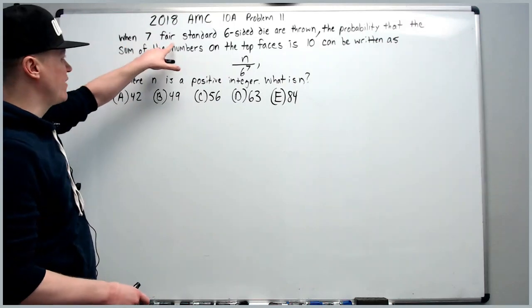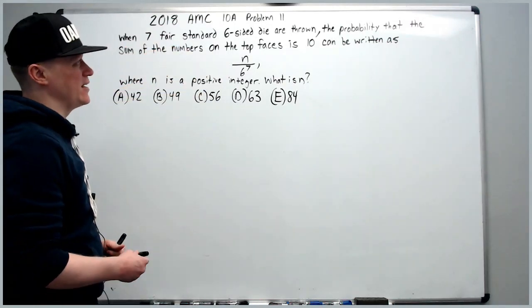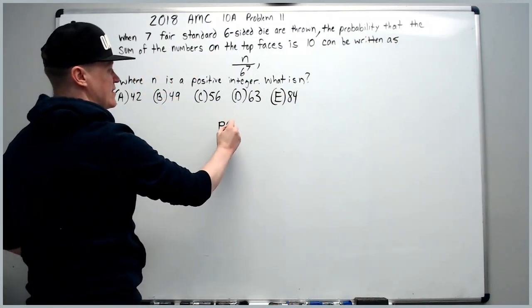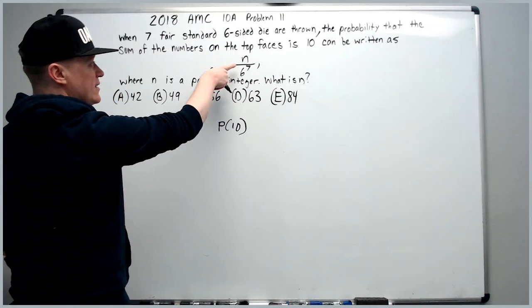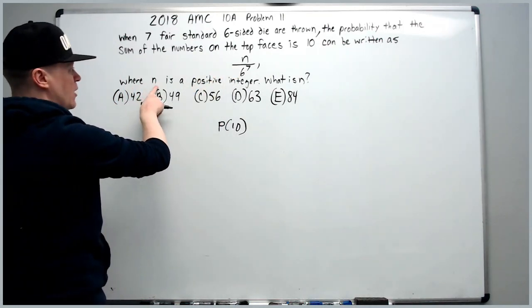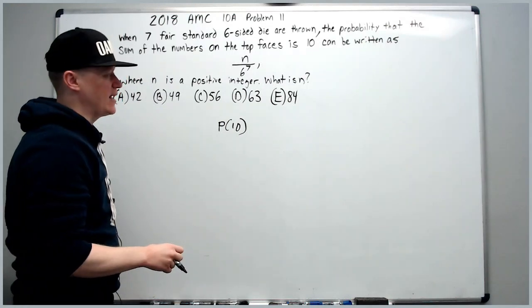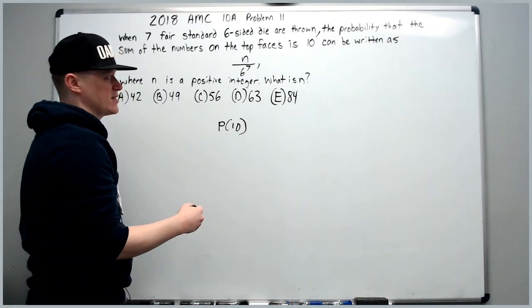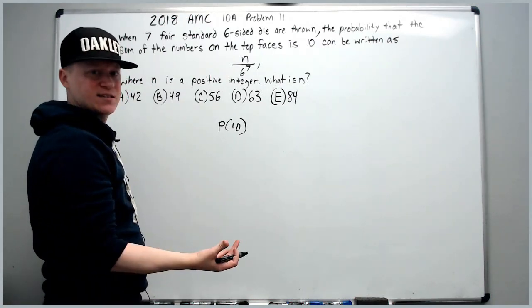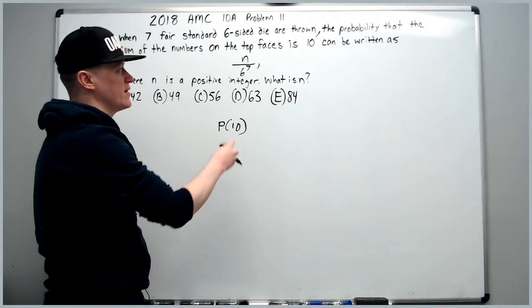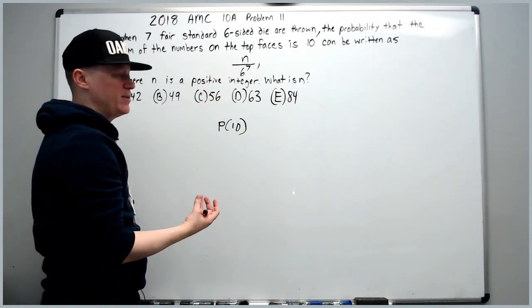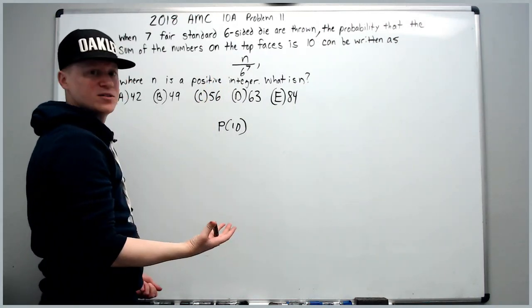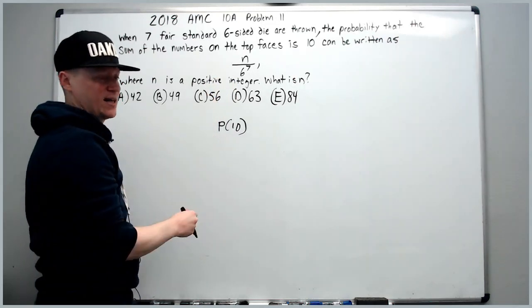So it's one of the rare times that something from the A test also appears to contribute to your thinking on the B test. When 7 fair standard 6-sided die are thrown, the probability that the sum of the numbers on the top faces is 10 can be written as n over 6 to the 7th, where n is a positive integer. What is n?